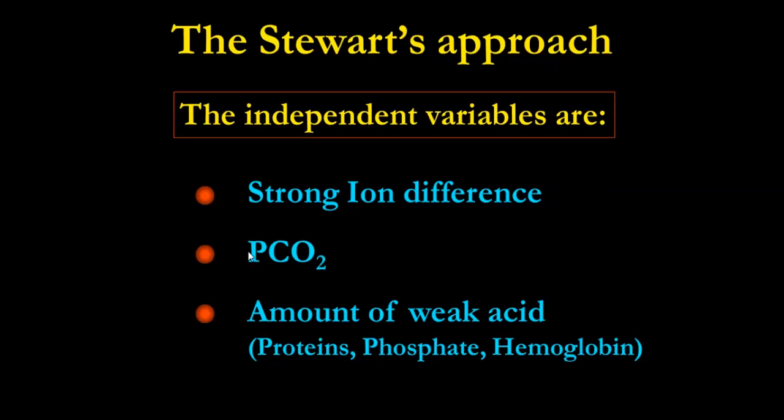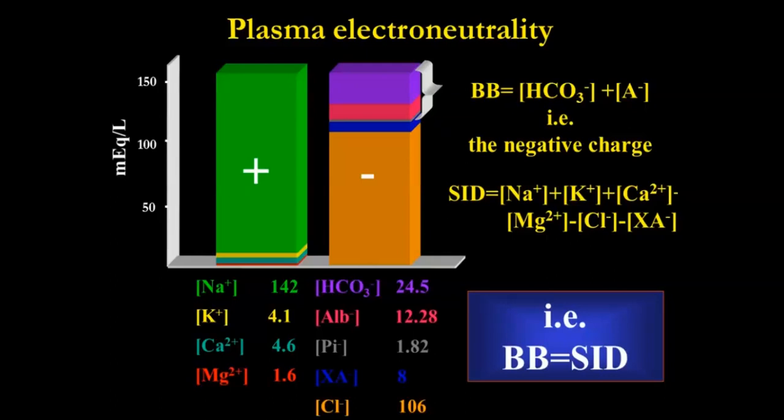What is determined? The independent variables for the acid-base equilibrium are the difference between strong ions, that you can call between a strong base and strong acid, plus and minus. The nomenclature change over the decades, but the concept is the same. The PCO2, which is nothing else than a weak acid, which is the carbonic acid, and the amount of the other weak acids, protein, phosphate, and hemoglobin in the blood, which is ATOT.